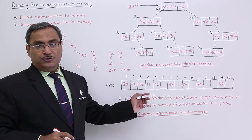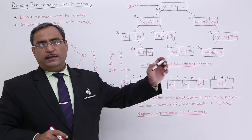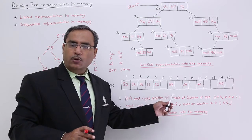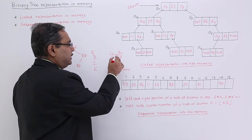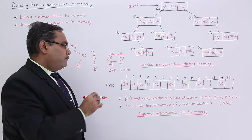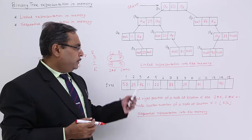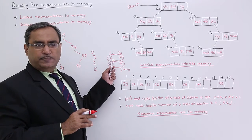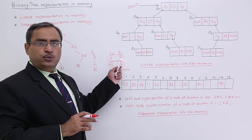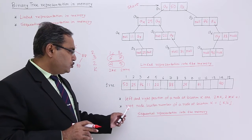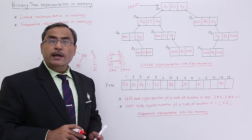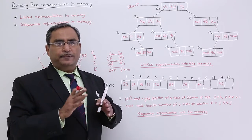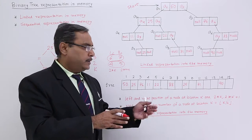The left child and right child positions of a node at location k are 2*k and 2*k+1. So who is the left child and who is the right child — after writing in sequential representation, that relationship is not lost; we can easily find it out. Now, doing the reverse: from positions 6 and 7, how to get back to 3? From positions 4 and 5, how to get back to 2? It is k divided by 2, floor of that. So 6/2 = 3 (floor 3), and 7/2 = 3.5 (floor 3). So the parent node location of a node at location k is floor(k/2).